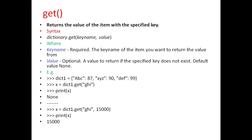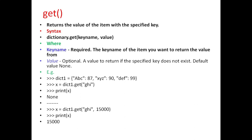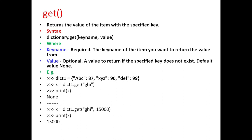Next is get. This method returns the value of the item with the specified key. The general syntax is dictionary.get with parameters key name and value, where key name is a required parameter which specifies the key name of the item that you want to return, and value is an optional parameter which specifies the value to return if the specified key does not exist — default value is None.